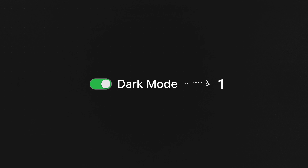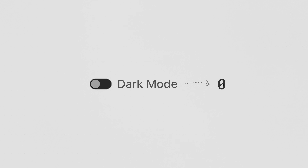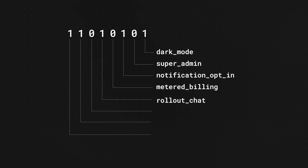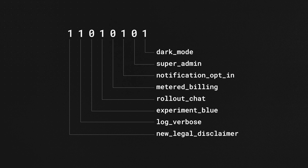We normally stop at the integer value level, but for bit masking, we're going to drop down to the bits instead of the byte itself. If we're working at the bit level, that means we have eight discrete spaces for on/off information, and this is where we're going to put our feature flags or configuration values. We're going to assign a feature to every individual bit. Dark mode is going to be bit number one, super admin bit number two, all the way down to new legal disclaimer at bit number eight.